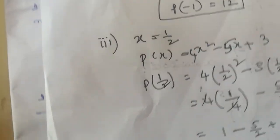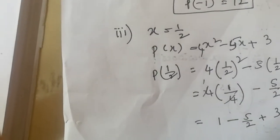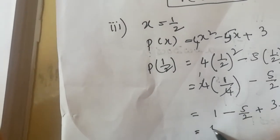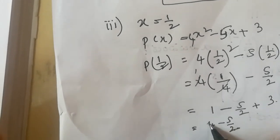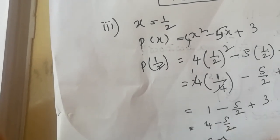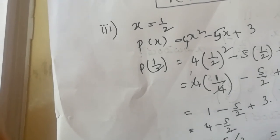Now 3 plus 1 is 4, so 4 minus 5/2. Taking 2 as common denominator: 8 minus 5, all divided by 2. This gives you the answer 3/2.